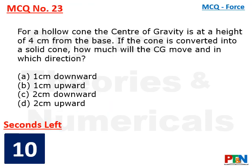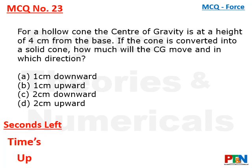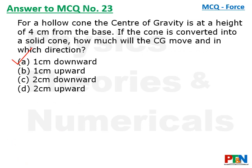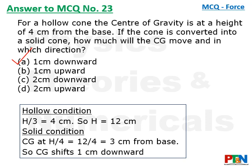Next MCQ: for a hollow cone, the center of gravity is at a height of 4 cm from the base. If the cone is converted into a solid cone, how much will the CG move and in which direction? 10 seconds timer. The answer is 1 cm downward. In hollow condition, CG is at h/3: so h/3 equals 4 cm, meaning h equals 12 cm. In solid condition, CG is at h/4 equals 12/4 equals 3 cm from the base. It was earlier at 4 cm from the base and is now at 3 cm, so it has moved 1 cm downward. That is option A.